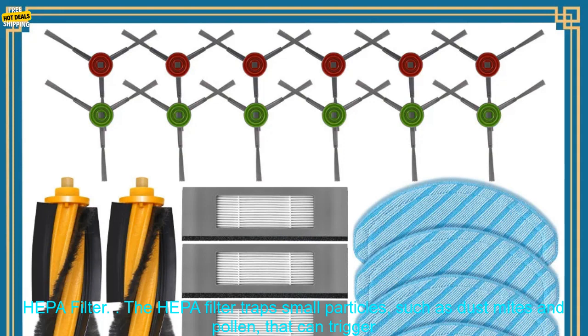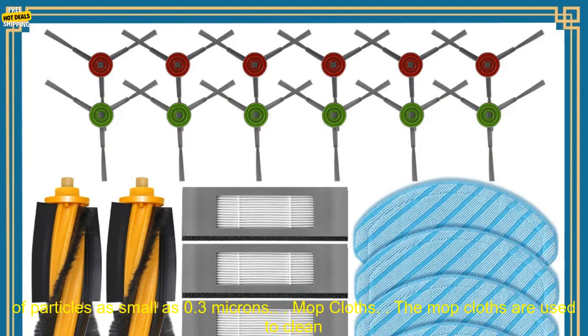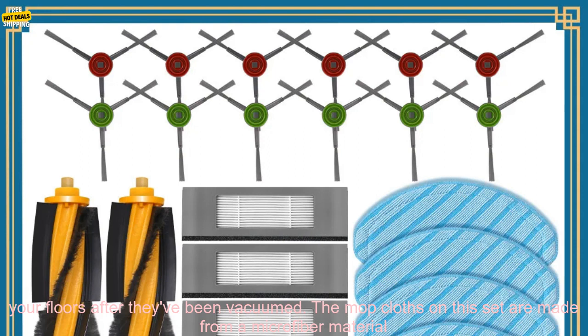HEPA Filter. The HEPA filter traps small particles, such as dust mites and pollen, that can trigger allergies and asthma. The HEPA filter on this set is made from high-quality materials that can trap 99.97% of particles as small as 0.3 microns.